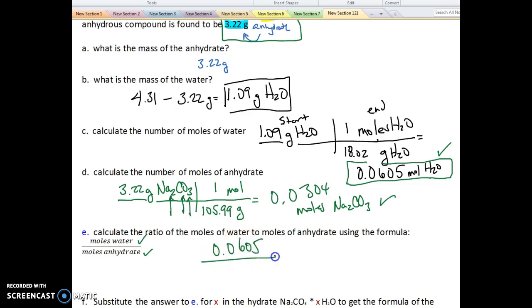I'm always going to put that on top. It's always going to be the largest of the two numbers, 0.0605. And I'm going to divide it by my moles of anhydrate, which is right here, 0.0304. Now,